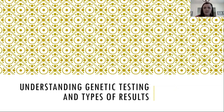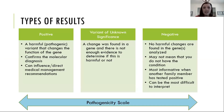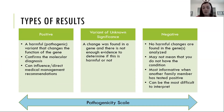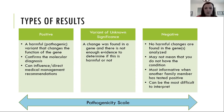That covers some of the basics about what types of changes we could see on testing. Now I want to dig into the testing a little bit. When you're getting a genetic test, it's important to make sure you're testing for the right thing — getting a good description of your diagnosis as far as features and symptoms so that we can make sure we're testing the right condition. And then when you get those results back, really understanding what those results mean. When we think about genetic testing, we're thinking about three types of results.